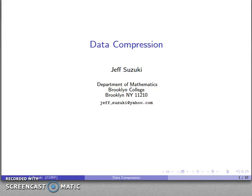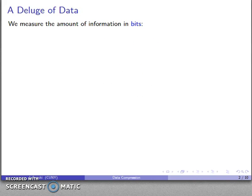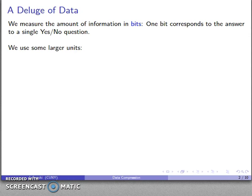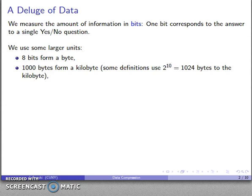Let's talk about data compression. We measure the amount of information in a unit called a bit. A bit corresponds to the answer to a single yes or no question. This is actually too small a unit to be very useful, so we tend to group bits into larger units. Eight bits form a byte, and 1000 bytes form a kilobyte.